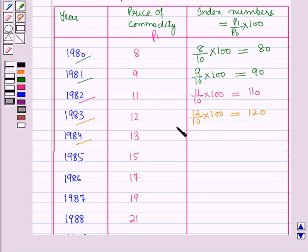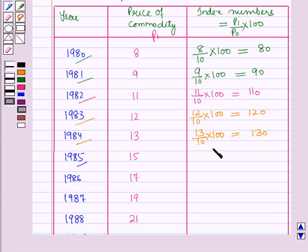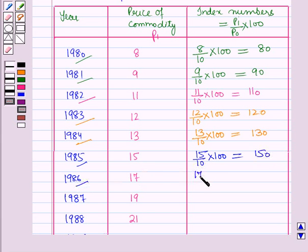For 1984, the index number is 13 over 10 into 100, which is equal to 130. For 1985, the index number is 15 over 10 into 100, which is equal to 150. For 1986, it is 17 over 10 into 100, which is equal to 170.